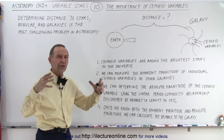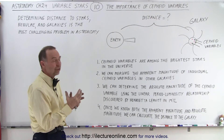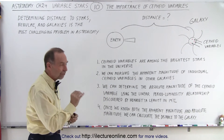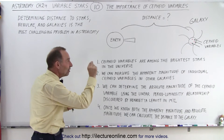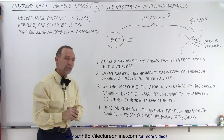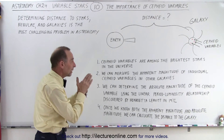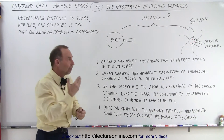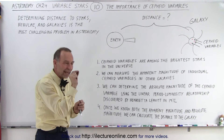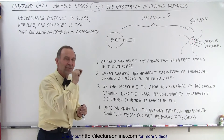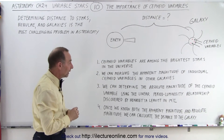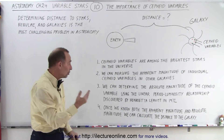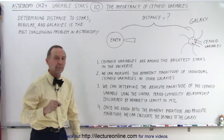Cepheid variables are super large red giants that are fluctuating in size. Red giants are big to begin with, and the super massive red giants are absolutely large, really, really bright stars. So, Cepheid variables are so bright that we can actually see individual Cepheid variables in other galaxies beyond our own. We're able to measure the apparent magnitude — how bright they appear to us as measured from the Earth. We can zoom in and measure the brightness of a particular singular Cepheid variable, even if it's in another galaxy. Then, we can determine the absolute magnitude of the Cepheid variable — how bright it actually is — by using the linear period-luminosity relationship discovered by Henrietta Leavitt.